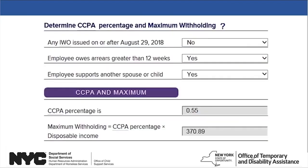If you select Yes to indicate the Income Withholding Order was issued prior to August 29, 2018, you will also need to select Yes or No to indicate whether the employee supports another spouse or child. If you have received other income withholding orders for this employee with different custodial parties and children, this response will be Yes. If you don't know, you can ask the employee. Click on the CCPA and Maximum button — in this example, the percentage is 55% and the maximum amount is $370.89.